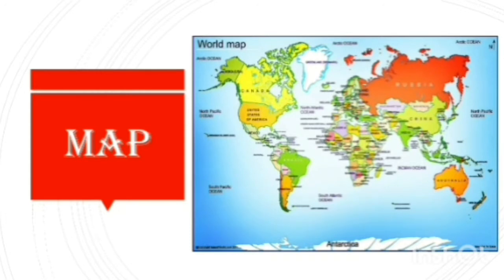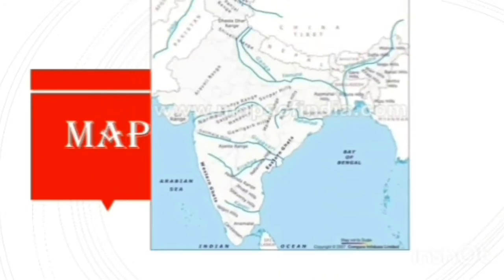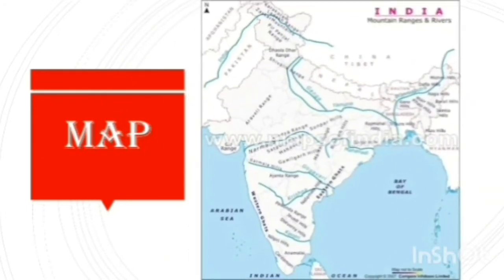All the countries are shown in this world map. In this map, mountains and rivers are shown.